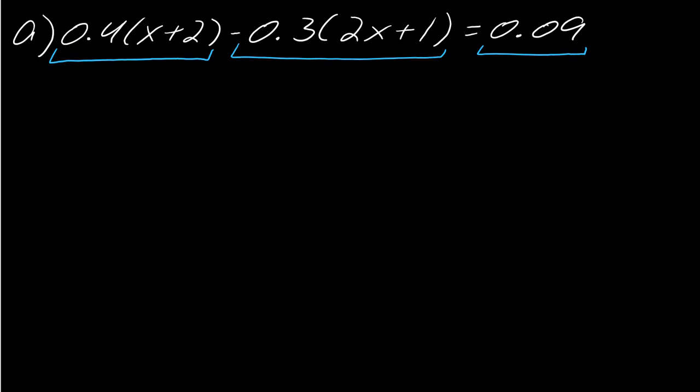And so you only have to do this once to each part, so you're just going to do it to the part in the front. And so I'm going to move all of these decimals two spots over, like so, to get 40 times x plus 2 minus 30 times 2x plus 1 equals 9. And now I can solve it like usual.